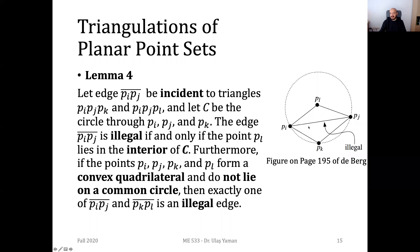We have an edge p_ij, the intermediate edge, which is incident to two triangles — an upper and a lower triangle. We have a circle C passing through points i, k, and j — just three of the four corners. We can say that the edge p_ij is illegal if and only if the point p_l, which is not on the circle, resides in the interior of circle C. If that's the case, without looking at angles, we can say this is an illegal edge that must be legalized.